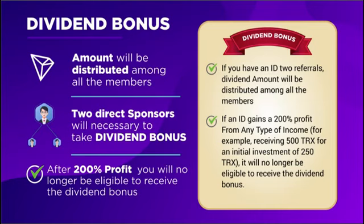The dividend bonus is available if you have made a minimum of 2 direct referrals, after which the dividend amount is distributed among all qualifying members. However, if an ID gains 200% profit from any income type — for example, receiving 500 TRX on an initial investment of 250 TRX — it will no longer be eligible to receive the dividend bonus.